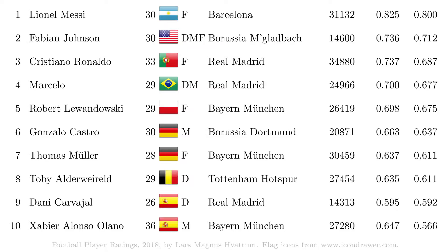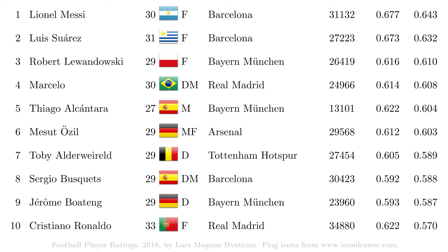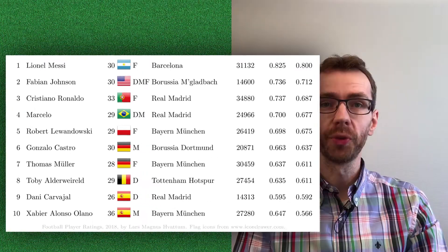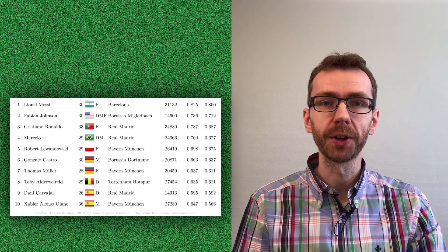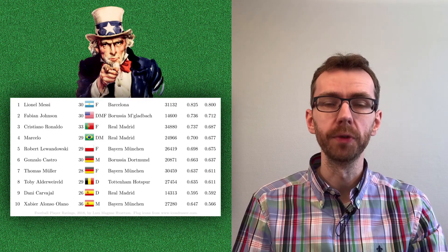Looking at the top 10 players in the training dataset according to the model using league components, we have a fair collection of decent footballers. When using teammates to anchor the player ratings, the list changes a bit. While there are still some excellent players on the list, perhaps some will react to the fact that Ronaldo is now at number 10 instead of number 3. Hopefully, when publishing more results from the current rating model, I will get feedback that allows us to further improve the models.